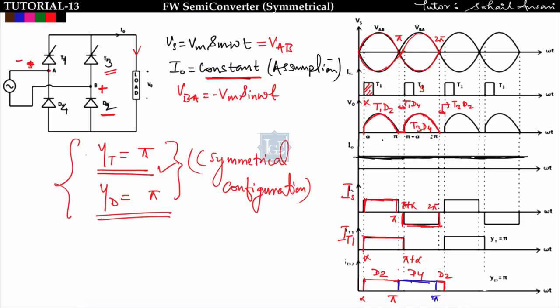The average output voltage will be found after covering all semi-converter configurations, since average output voltage and source current are the same for all of them.